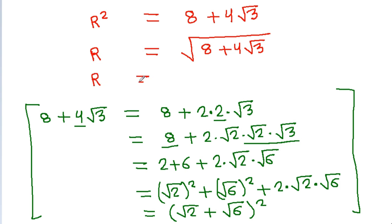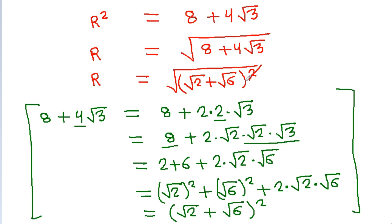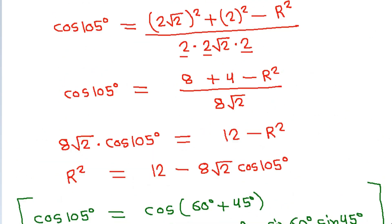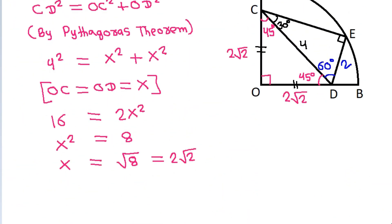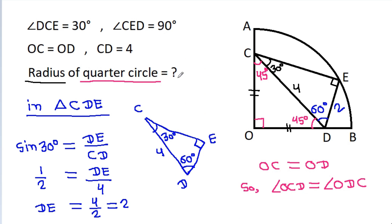So R is equal to the square root of 2 plus the square root of 6. The radius of the quarter circle is root 2 plus root 6.